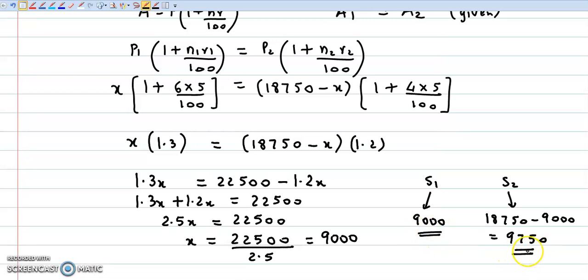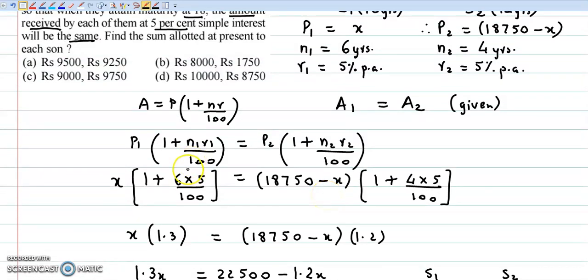So it's 9,000 and 9,750. These are the two principles. So the correct answer is option C.